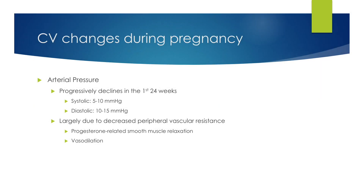As far as the cardiovascular system is concerned during pregnancy, there is a progressive decline in arterial blood pressure in the first 24 weeks of pregnancy. The systolic blood pressure drops approximately 5-10 mmHg, and the diastolic blood pressure drops 10-15 mmHg. This is largely due to decreased peripheral vascular resistance, from progesterone-mediated smooth muscle relaxation and vasodilation.